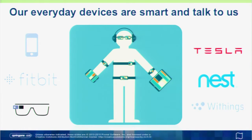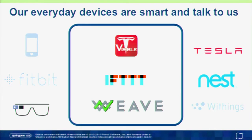Nest, for example, or Withings scale that pays attention to what's happening day to day where you provide it with measurements when you get near it. We have things like Tesla cars that are quite aware of what's happening — they have sensors and are gathering data. Those devices tell us what's going on with ourselves and things we're using. But we're really interested in not only having devices communicate to us so we take action, but having them communicate with each other and take seamless action.